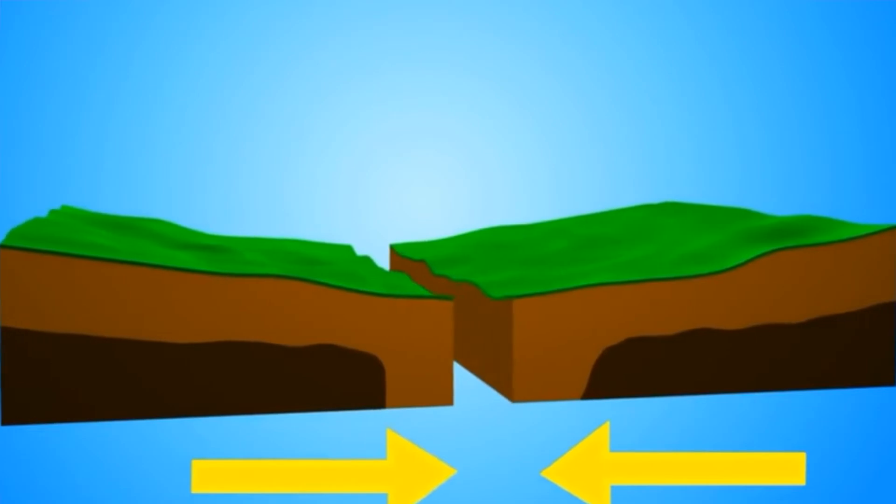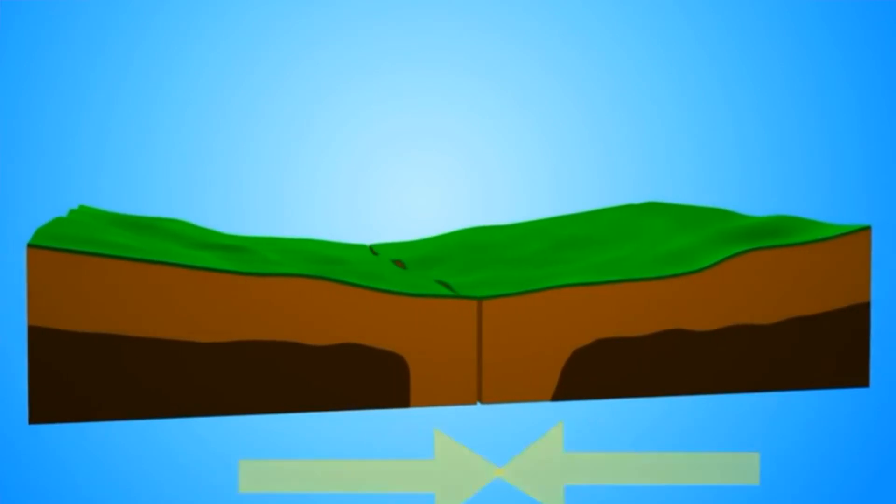Like volcanoes, earthquakes are another geological feature that can create massive destruction. An earthquake is the shaking and vibration of Earth's crust due to the moving of tectonic plates. They have the ability to happen along any boundaries. This usually happens when tension is released from inside the crust. When plates move, sometimes they get stuck, and when they do, pressure starts to build. When this pressure is eventually released, an earthquake is usually the result.